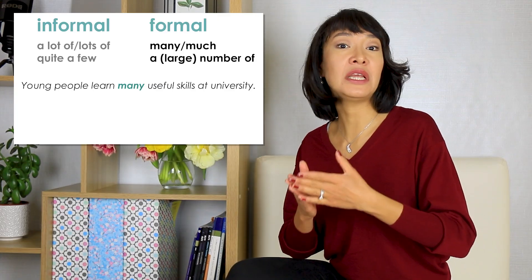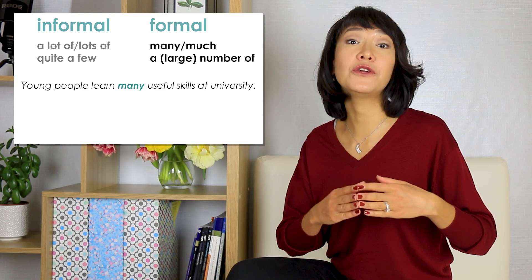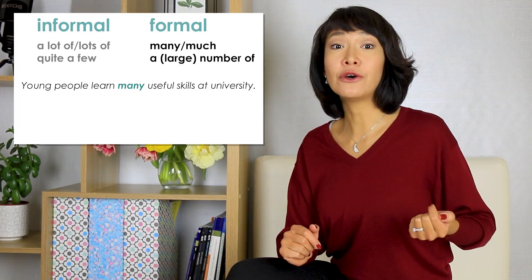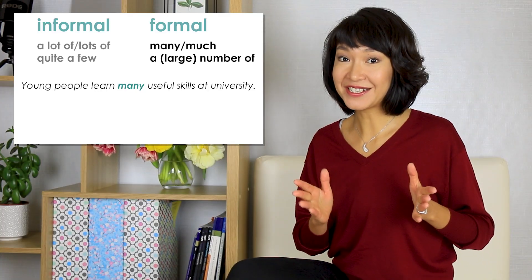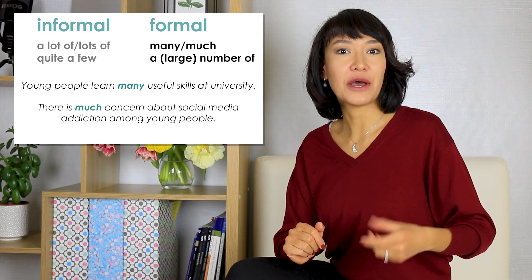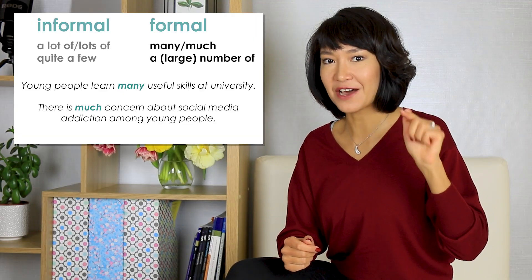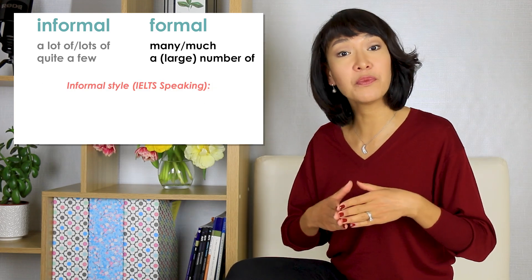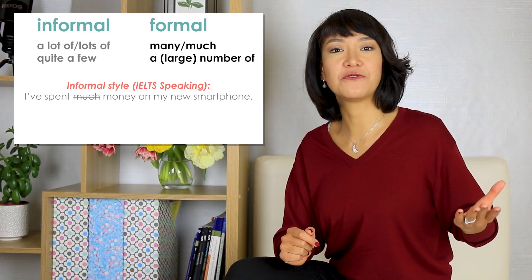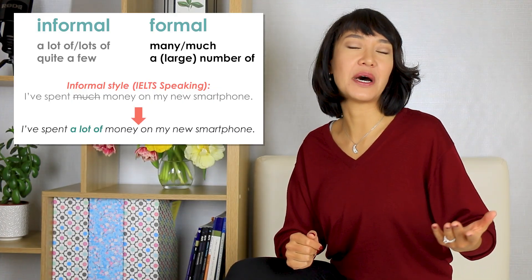'Young people learn many useful skills at university.' You might have learned at school that you should only use many and much if you are asking a question or if your sentence is negative — 'Do they learn many skills? No, they don't learn many skills.' But in a formal writing style, you can and should use many and much. 'There is much concern about social media addiction among young people.' This sentence sounds formal. In IELTS speaking, your style should be more informal and it's better to use a lot.